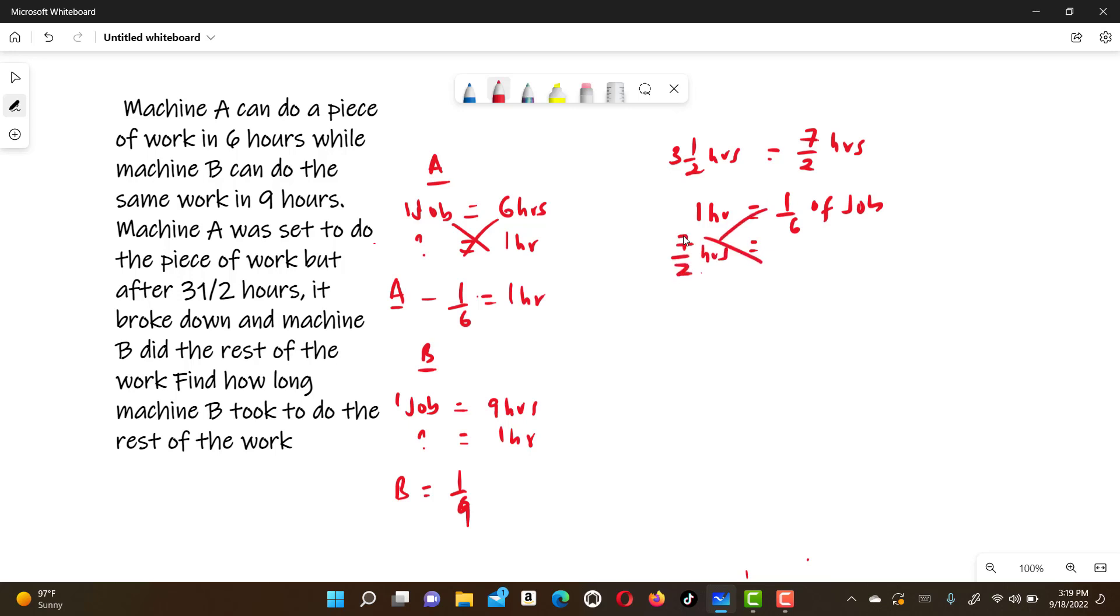Cross multiplying, you will find that machine A has done seven over two times one over six, which is the same as seven over 12 of the job.